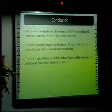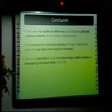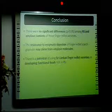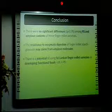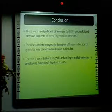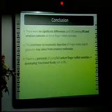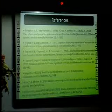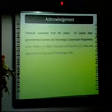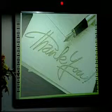We can predict that the resistance to enzyme digestion of finger millet starch granules may come from amylose molecules. We concluded that there were no significant differences among resistant starch and amylose contents of the three finger millet varieties, and that the resistance to enzymatic digestion of finger millet starch granules may come from amylose molecules. Because of the resistant starch content, there is potential for using Sri Lankan finger millet varieties in developing functional foods rich in resistant starch. I would like to acknowledge financial assistance from the India–Sri Lanka Intergovernmental Science and Technology Cooperation Program. Thank you all for listening.